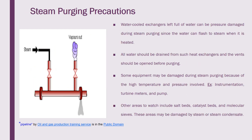Steam purging precaution: while going for steam purging, we must make sure there is no trapped material. If the process material vaporizes because of the steam, it may create an unstable environment inside the equipment. For example, in a water-cooled heat exchanger, if you have not fully drained the water inside the tube and you do steam purging, the water will evaporate with the steam and may create thermal shock - a water hammering effect. This causes stress to the equipment and may cause damage, so we must be very careful.